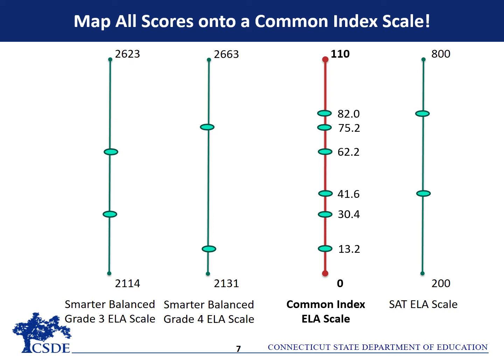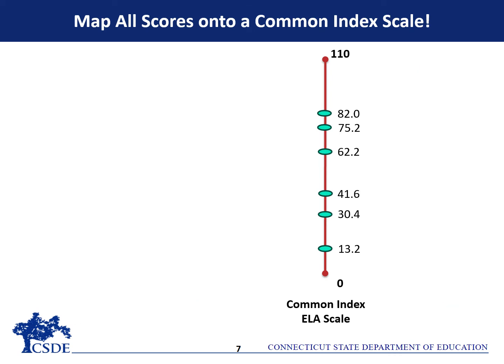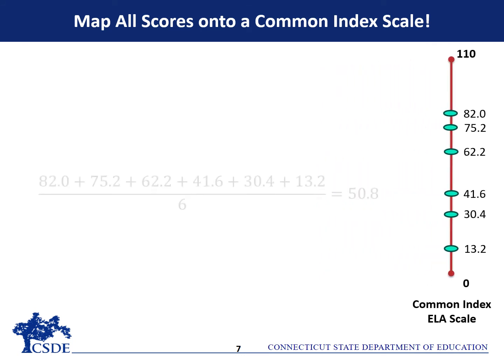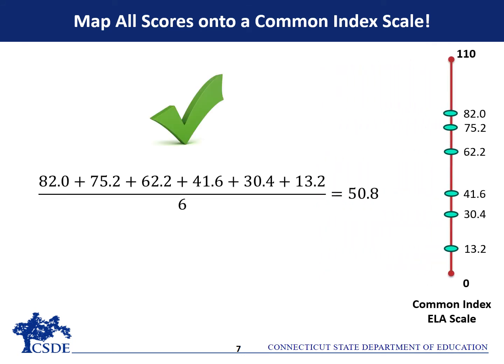Once all individual student scores for all tests are mapped onto the 0 to 110 scale, those index points can be averaged to generate the DPI or the SPI, which in this example is 50.8.